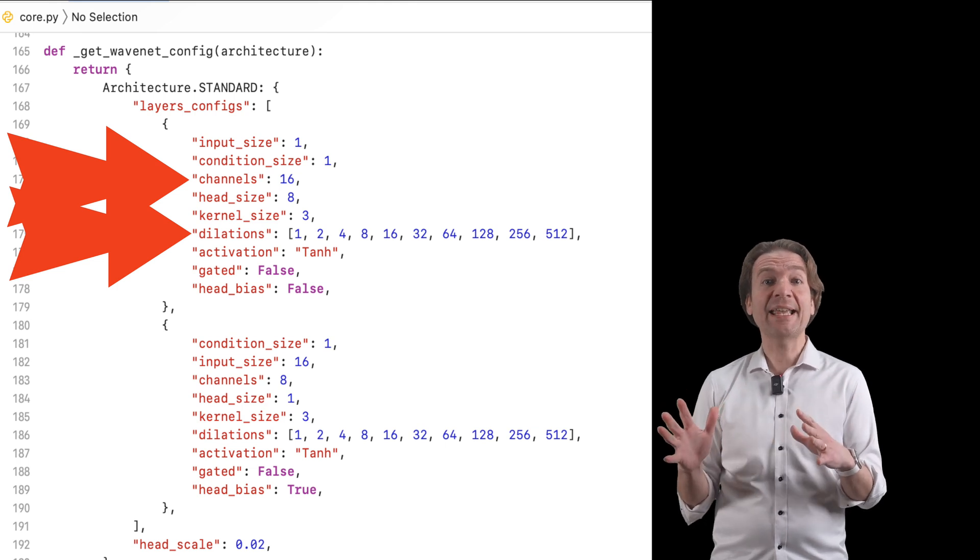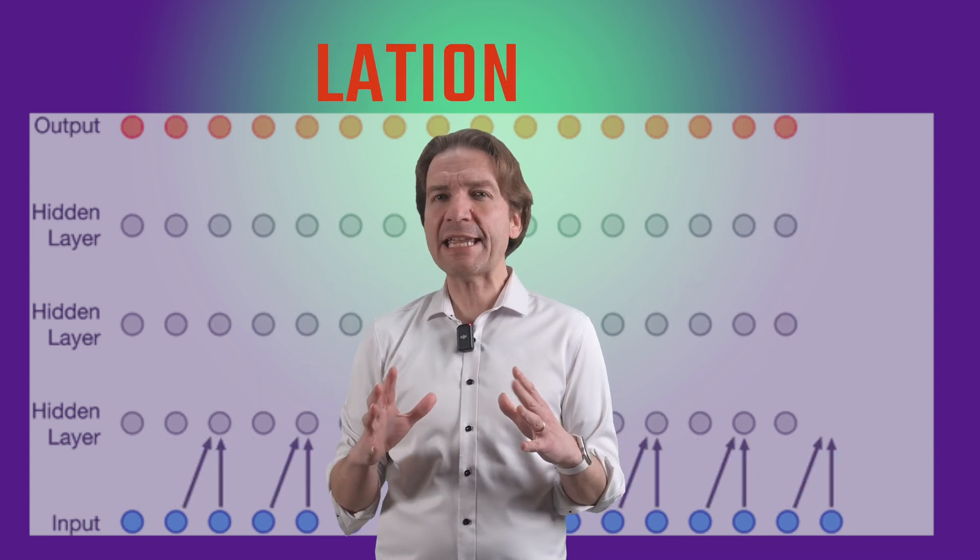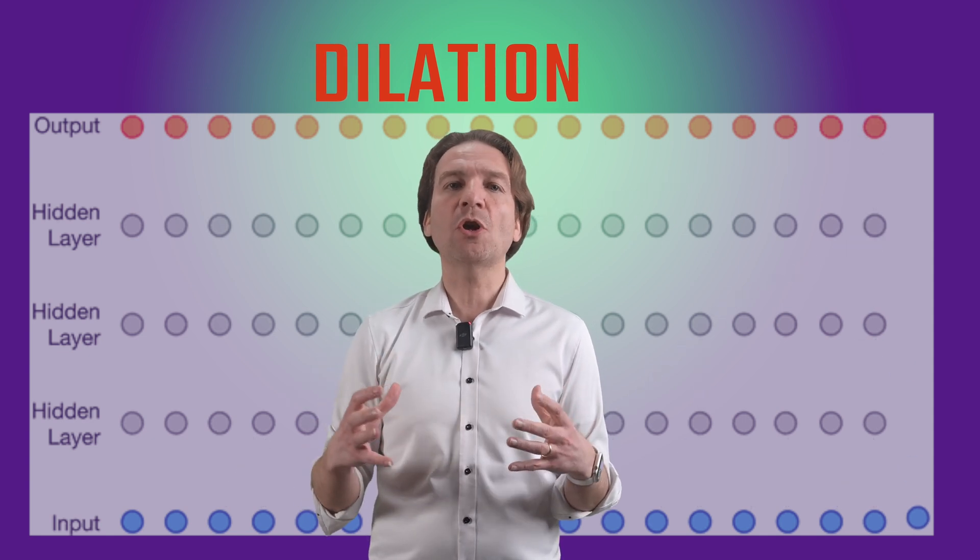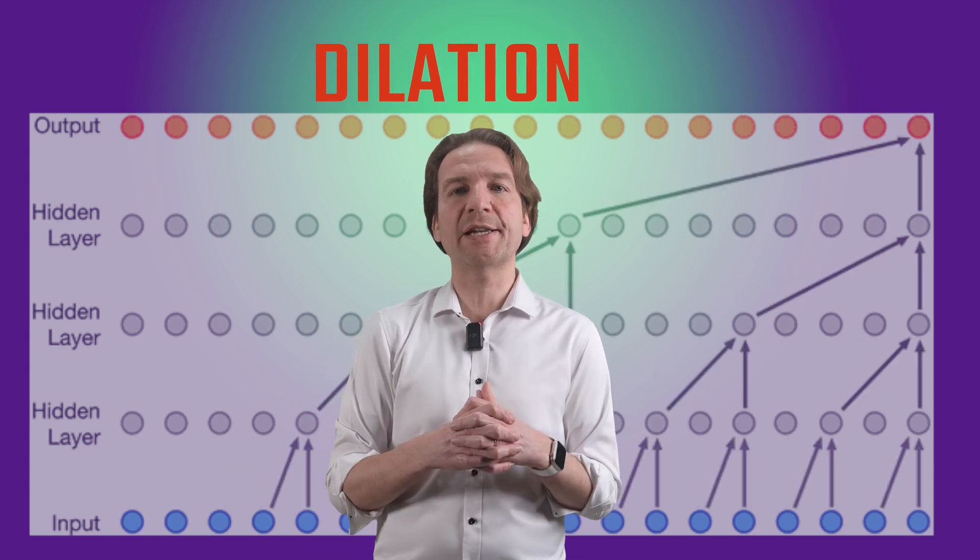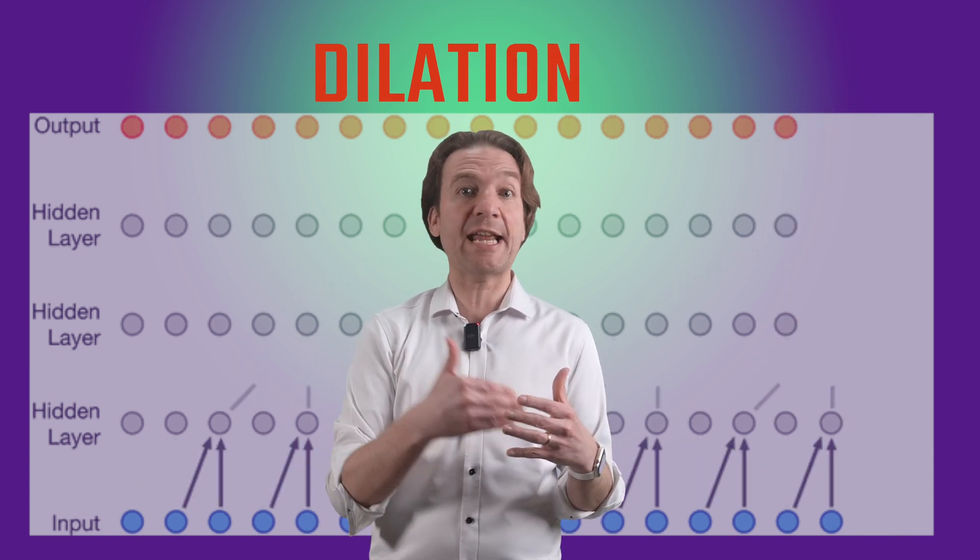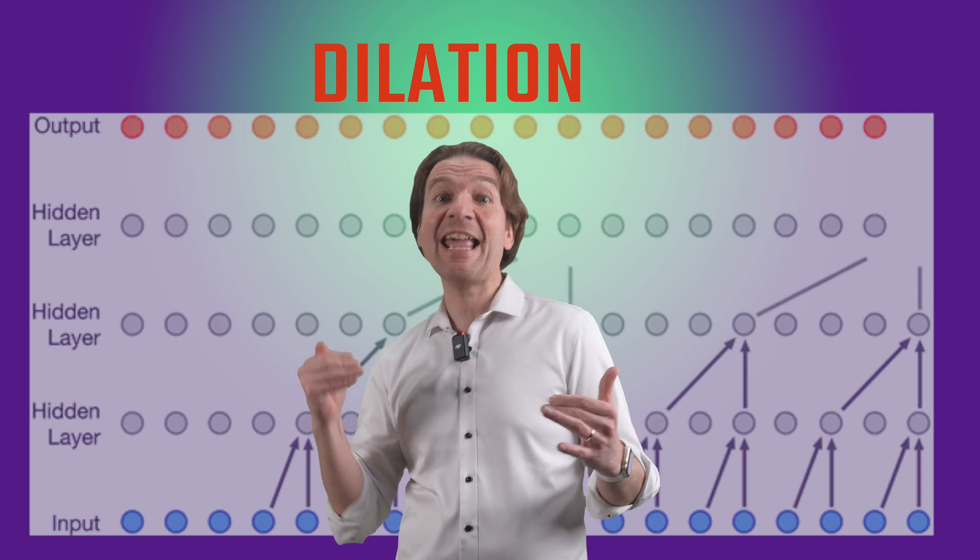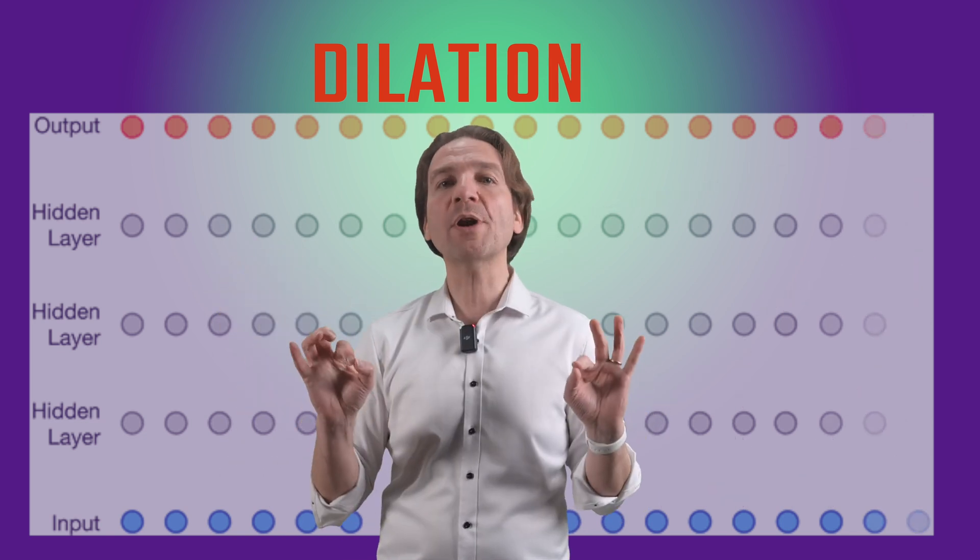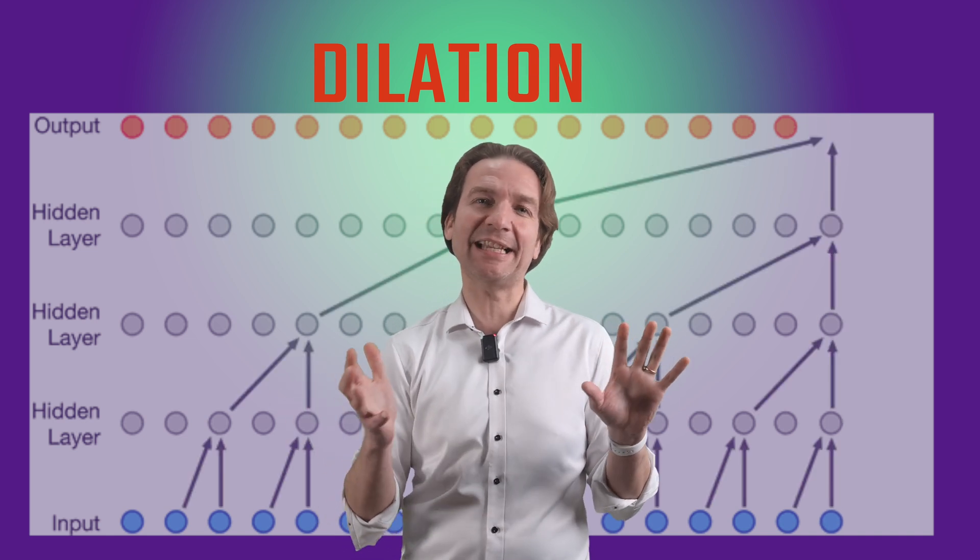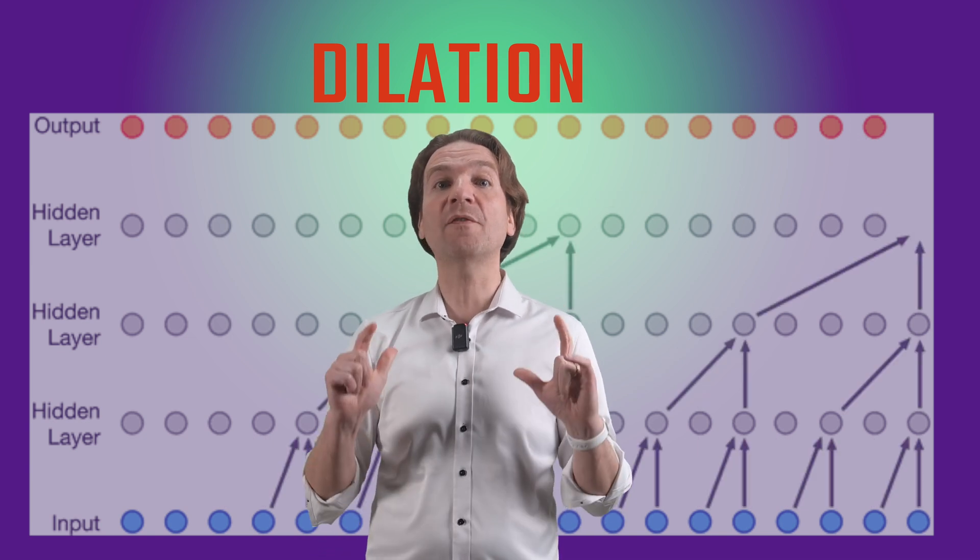Which are called channel and dilation. Simplifying, the dilation defines the number of layers used to capture the dynamic response of our guitar amplifiers and serves to increase the receptive field of the network, allowing it to reach further back in time to predict the next audio sample more accurately.